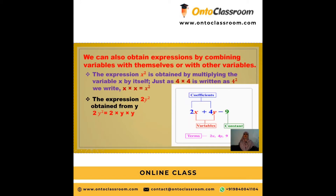We can also obtain expressions by combining variables with themselves or with other variables. For example, the expression x² is obtained by multiplying the variable x by itself. Just as a product of 4 is written as 4², we write x times x as x². Similarly, 2y² is obtained as the constant 2 multiplied by variable y multiplied by variable y.